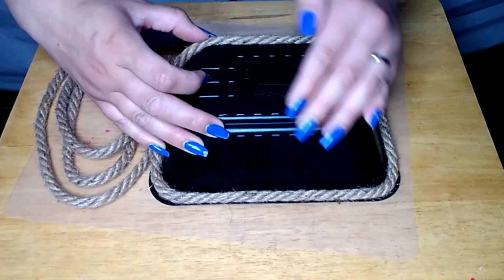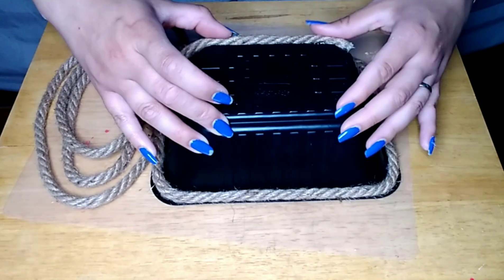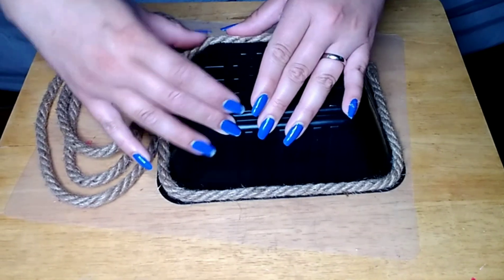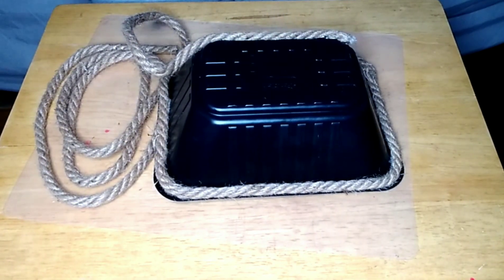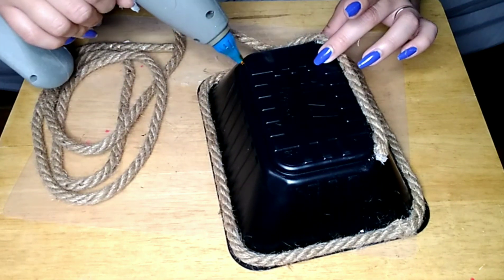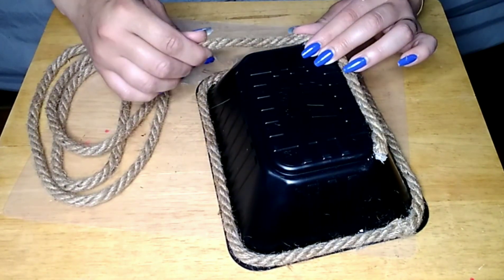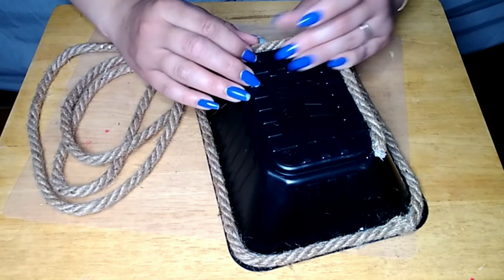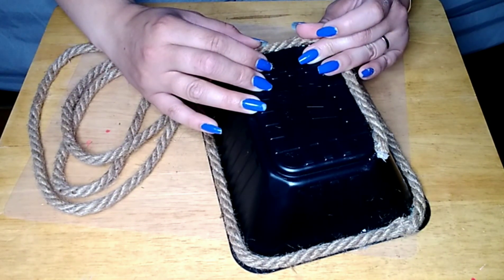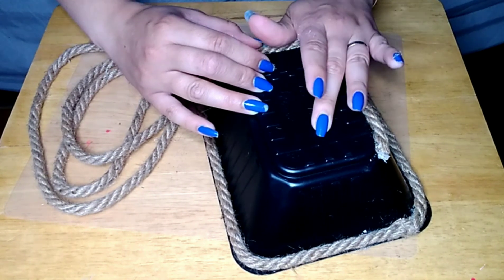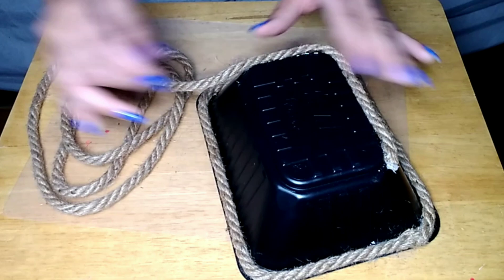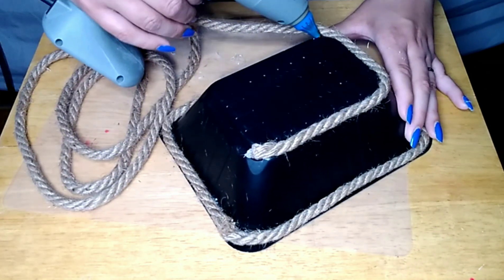You could put those little decorative like wood balls in there. You can do all kinds of stuff. So then the next thing I decided I wanted to do was put another strand of the rope along that bottom lip. Kind of just to match that top part of it. And like I said, I really liked the way that the rope looked against the black from the tray.